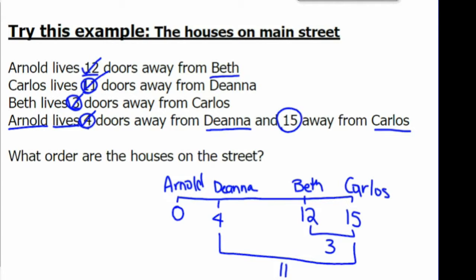The order of the houses on Main Street are Arnold, Deanna, Beth, and Carlos.